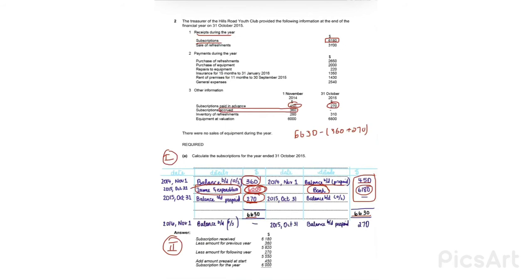So 6000 is written as subscriptions income in the income and expenditure account. Using the second method: start with bank receipts of 6180. Subscriptions paid in advance from 2014 (prepaid in previous year) are added: plus 450. The accrued amount from the previous year is deducted: minus 360. The closing prepaid is also deducted: minus 270. Calculation: 6180 + 450 − 360 − 270 = 6000. Both methods confirm the answer as 6000.